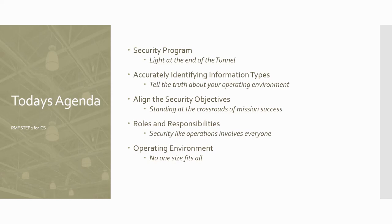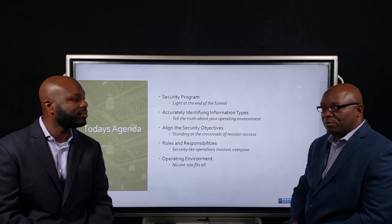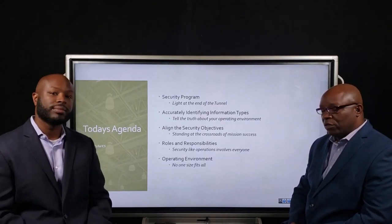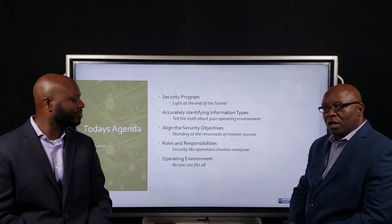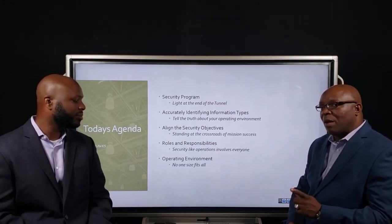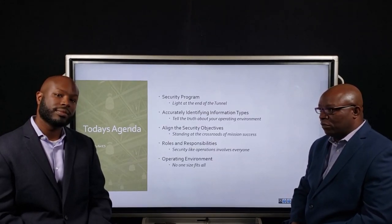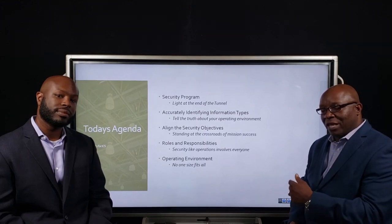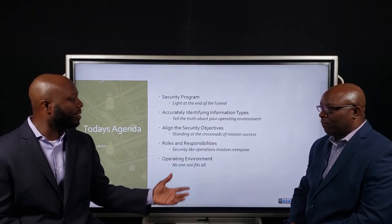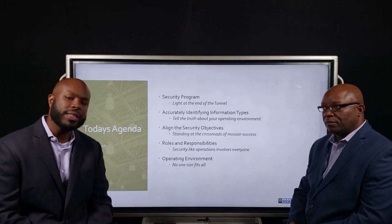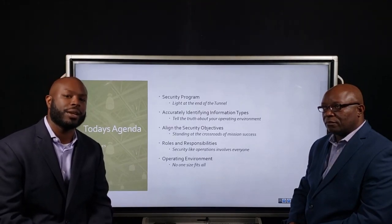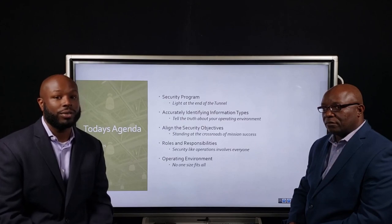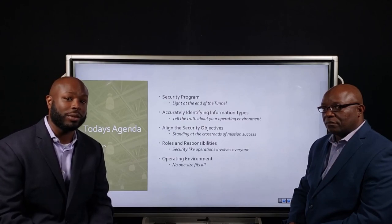In today's agenda, we're going to discuss these five areas: the security program, how to accurately identify the information types in your operating environment, security objectives and why that's important, roles and responsibilities within the risk management framework, and the operating environment — which is critical to successfully navigating the RMF process. We believe these five key areas are everything you would need to truly understand categorization, as step one is the most important of all.